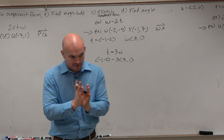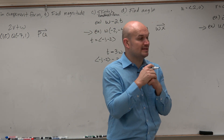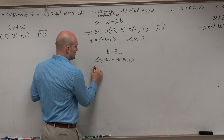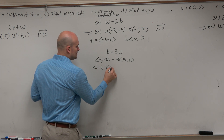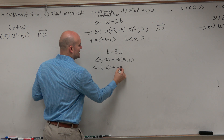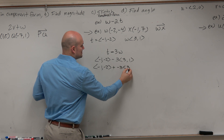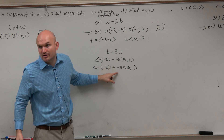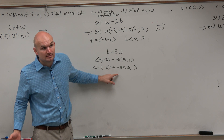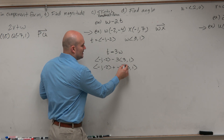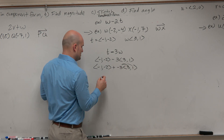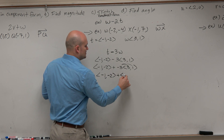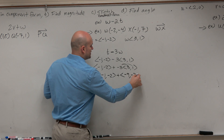What I prefer to do in this case is rewrite things in terms of addition. So I'm going to rewrite this as negative 1, negative 2, plus a negative 3 times 3, comma 1. Because subtraction is the same thing as adding a negative, right? So now I'm going to distribute that, and I get negative 1, negative 2, plus negative 9, comma negative 3.